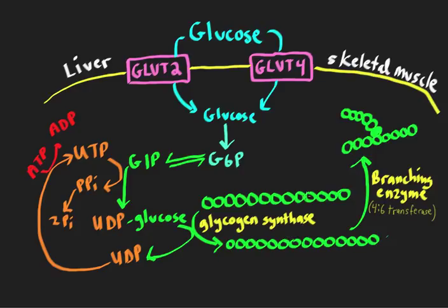Because glycogen is a branched molecule, a linear chain alone is insufficient — it's insoluble and we don't want it in that form. The enzyme that creates branches is called branching enzyme. It cleaves an alpha-1,4 bond and creates an alpha-1,6 bond at the branch point, essentially cutting and pasting a segment of glucoses to create a branch. Another name for this branching enzyme is 4-to-6 transferase, or amylo-1,4-1,6-transglucosidase.